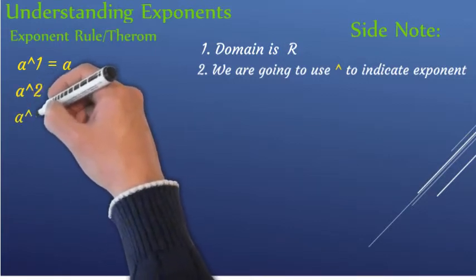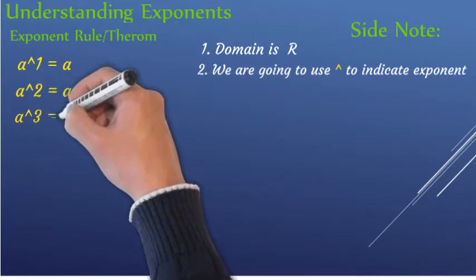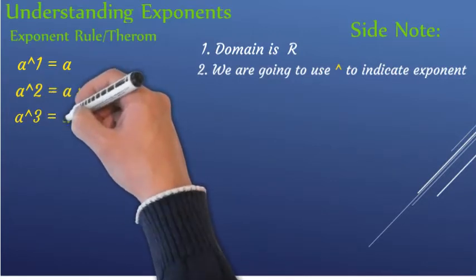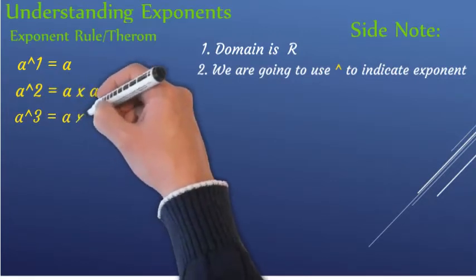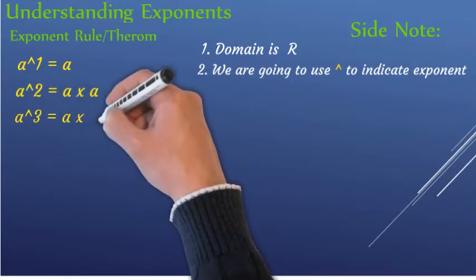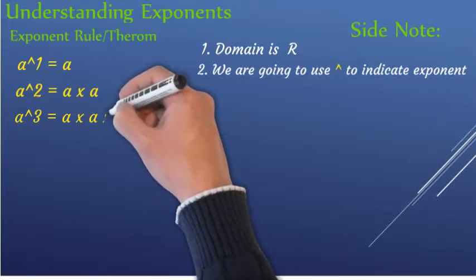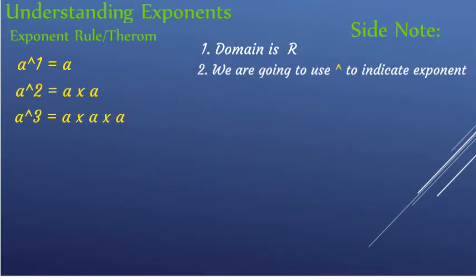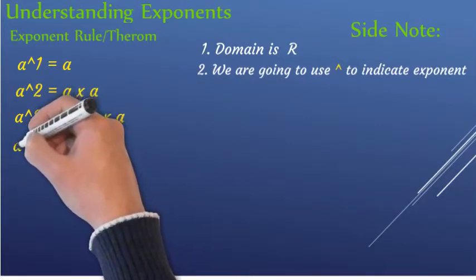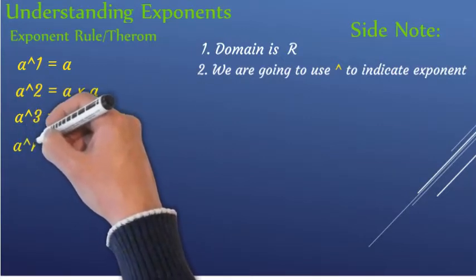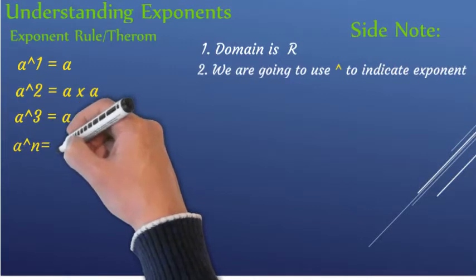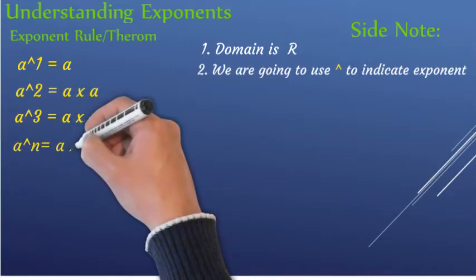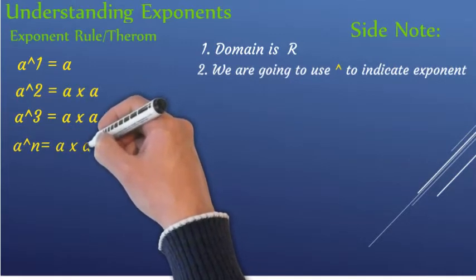A to the power of three is going to be A times A times A. In any case, A to the power of one will always be A.